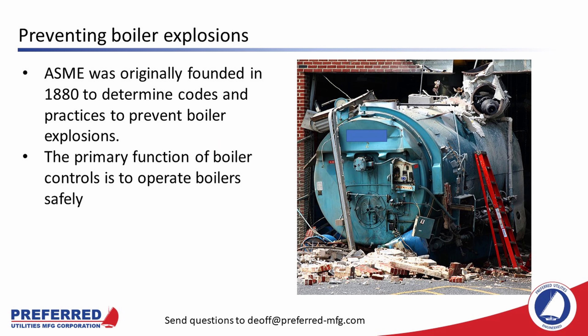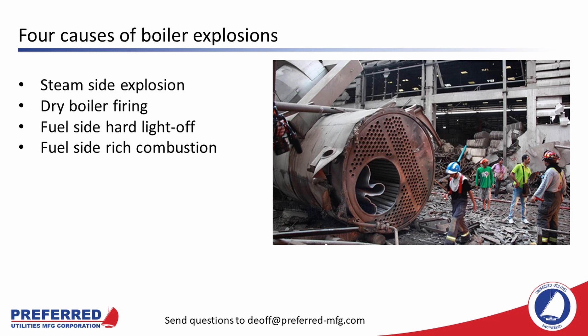Our final topic is preventing boiler explosions. Boiler explosions used to be very common — in fact, the American Society of Mechanical Engineers was originally founded in 1880 to determine codes and practices to prevent them, with their first meeting having just 30 people. The primary function of boiler controls is to operate the boiler safely. Boiler explosions usually fall into one of these categories: a steam side explosion, dry boiler firing, fuel side hard light-off, or fuel side rich combustion.